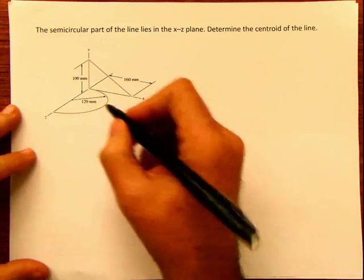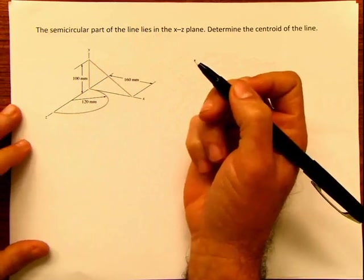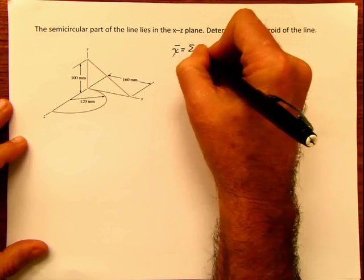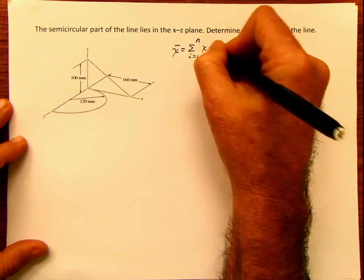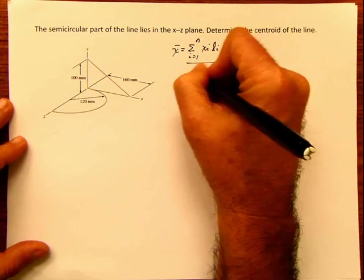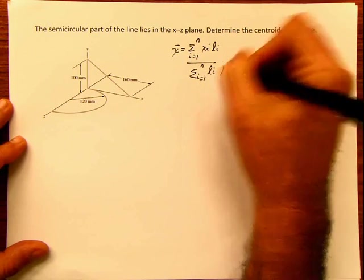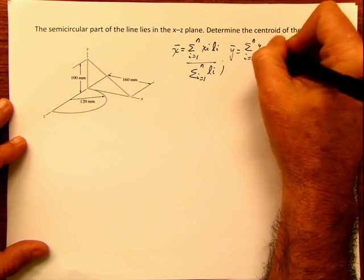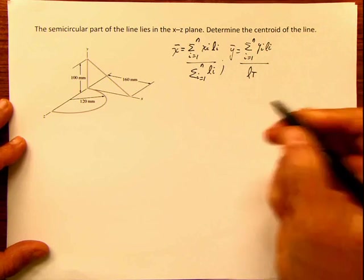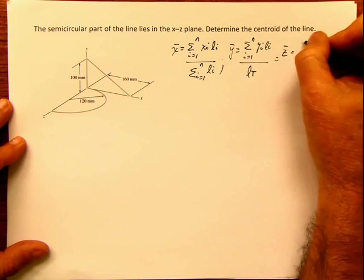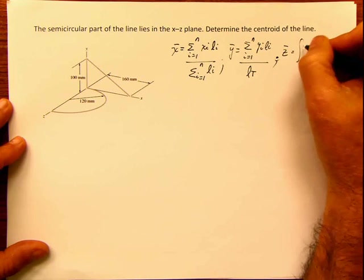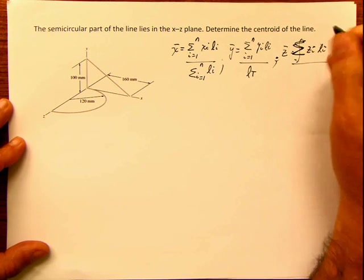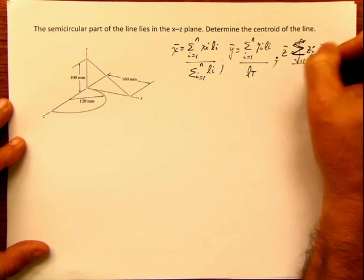The first thing we have to do is identify that these are wires and not areas. If they were areas, it's different. But because these are wires, our equations are going to be: x̄ equals the summation from i=1 to n of (xi × li) divided by the summation from i=1 to n of li. Then ȳ is the summation of (yi × li) divided by the total length. And z̄ is the summation of (zi × li) divided by the total length — always from i=1 to n.